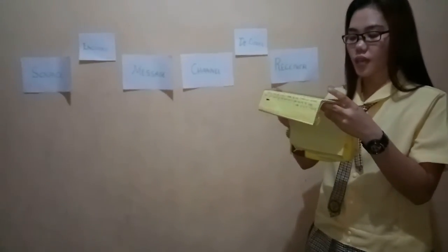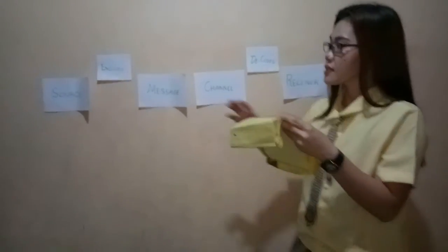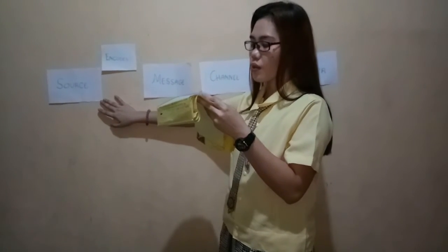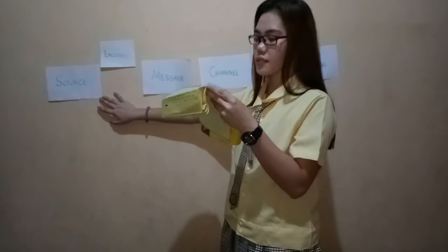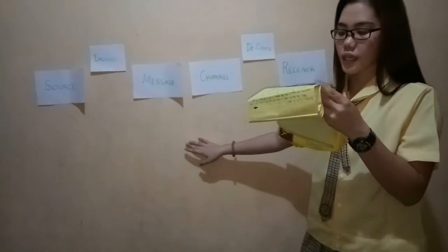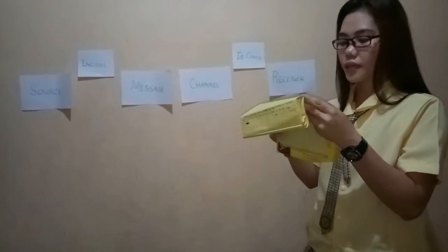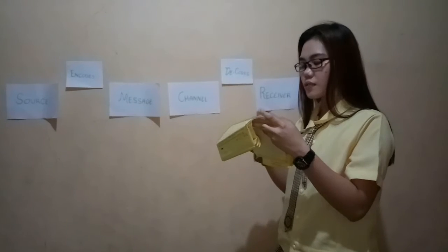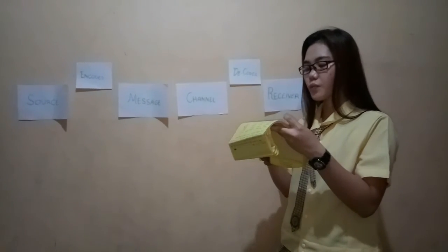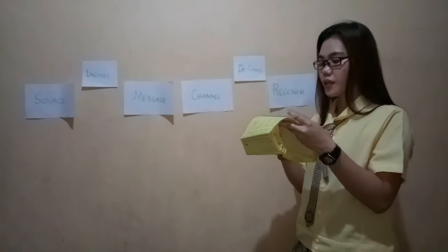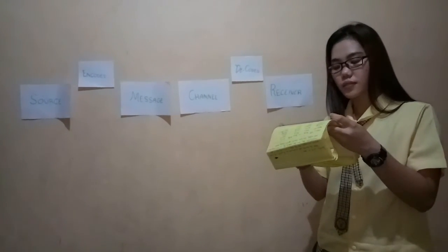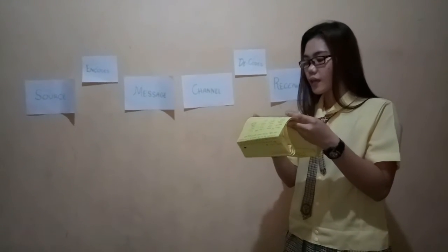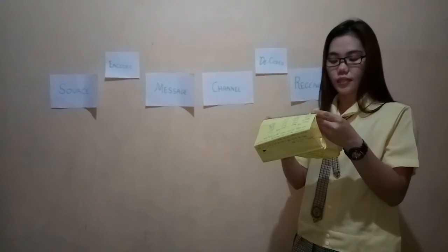In the SMCR model, S stands for source or sender. The sender is the source of the message — the person who originates it. Factors affecting the sender include communication skills: the individual's ability to read, write, speak, and listen. If the sender has good communication skills, the message will be communicated better. Communication skills include the ability to speak, present, read, write, and listen.